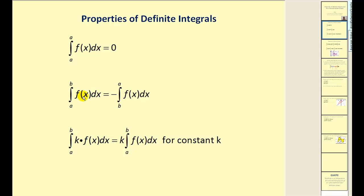The second property: if we have a definite integral with the limits of integration from A to B, reversing the direction of integration, meaning we integrate from B to A, would change the sign of the definite integral.